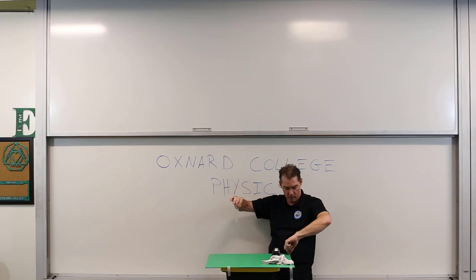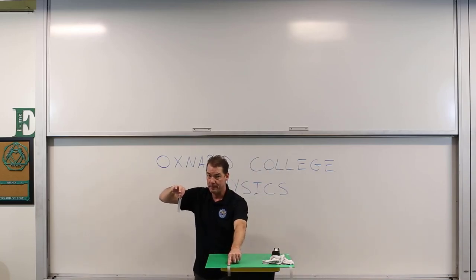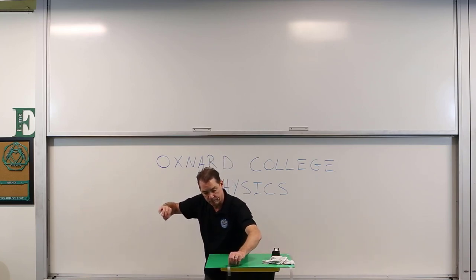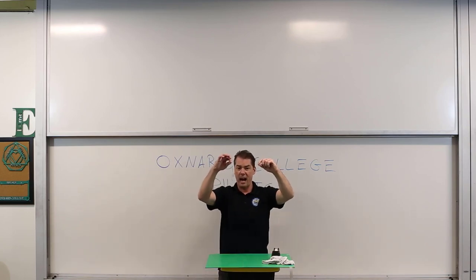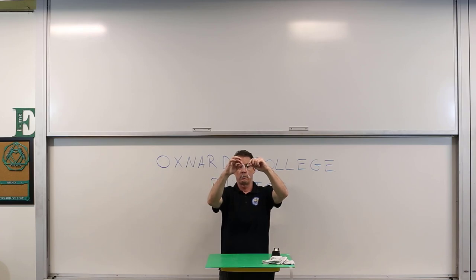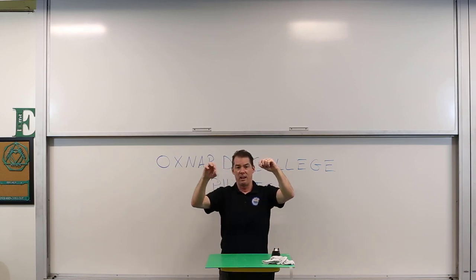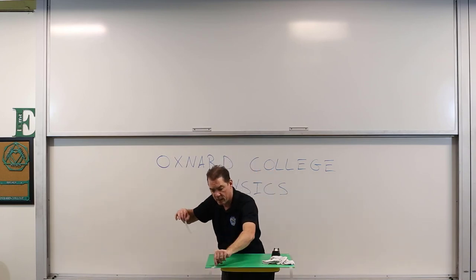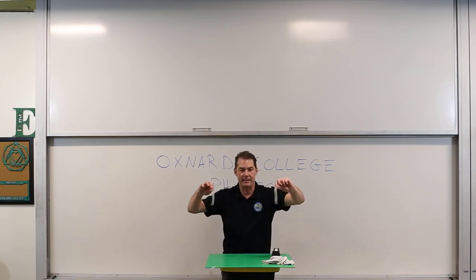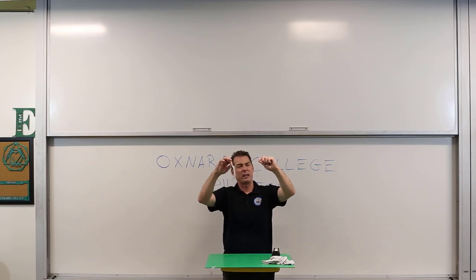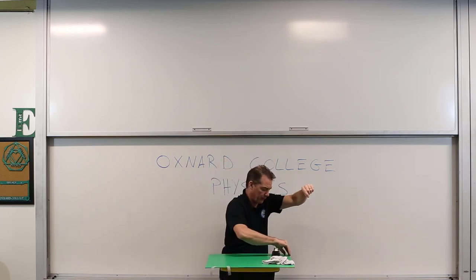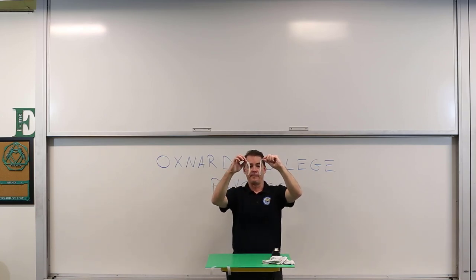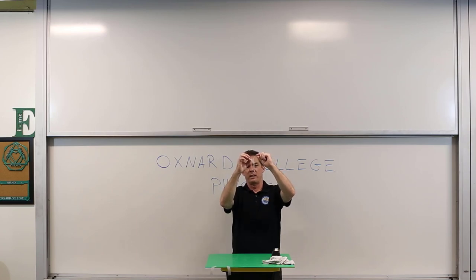Now let me take the top piece from one set and the top piece from the other set and bring them near each other. They don't grab onto each other — they're actually deflecting away, repelling one another. And if I take the bottom piece from the first set and the bottom piece from the second set, we again get some repulsion.